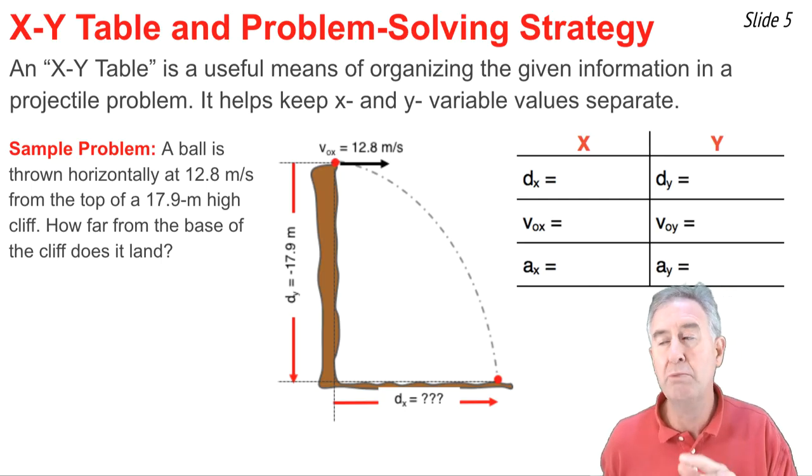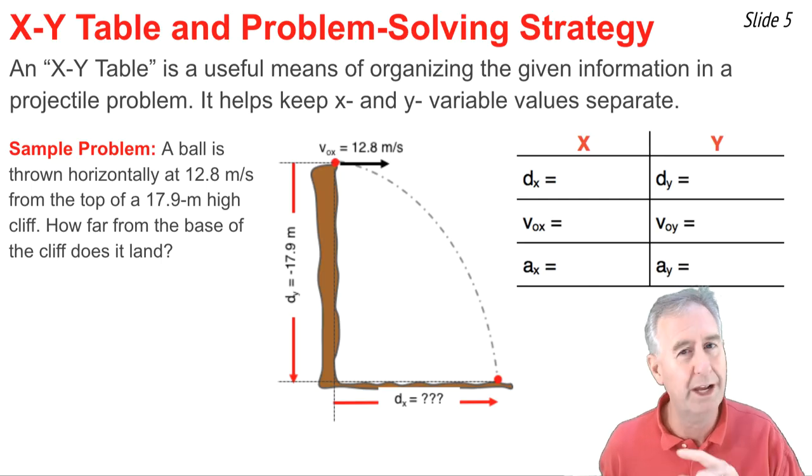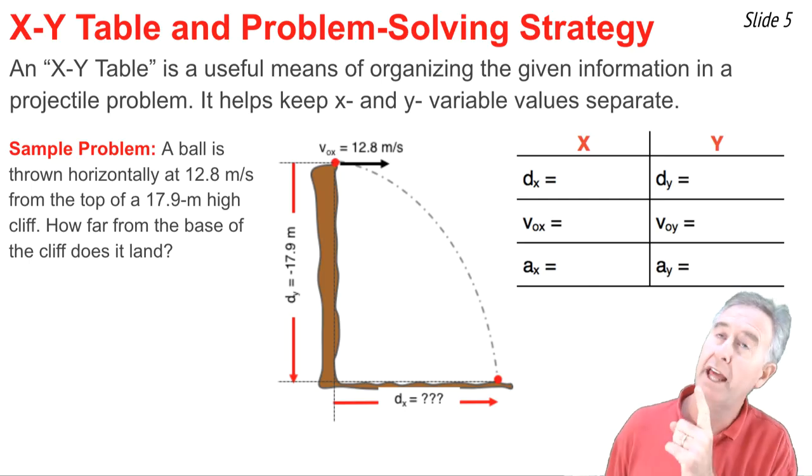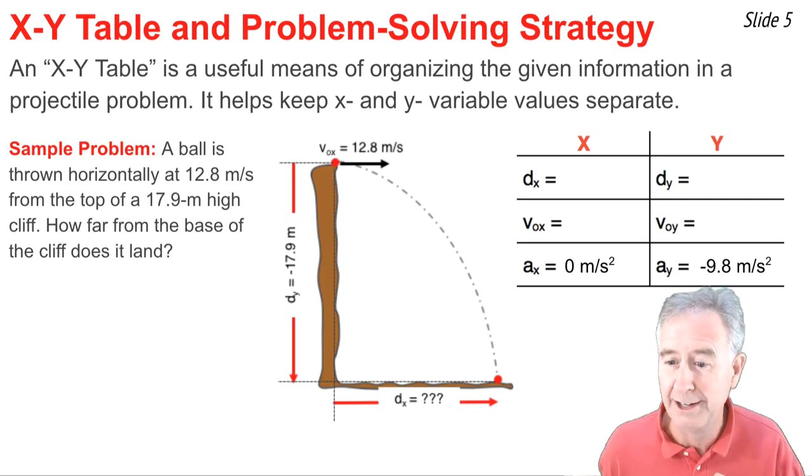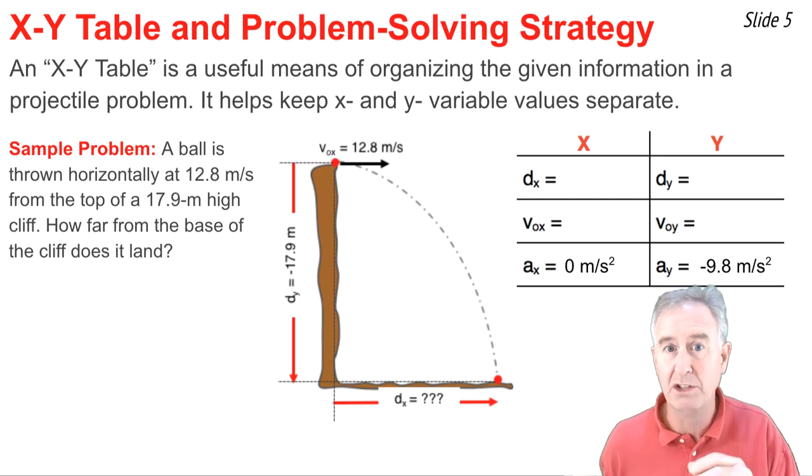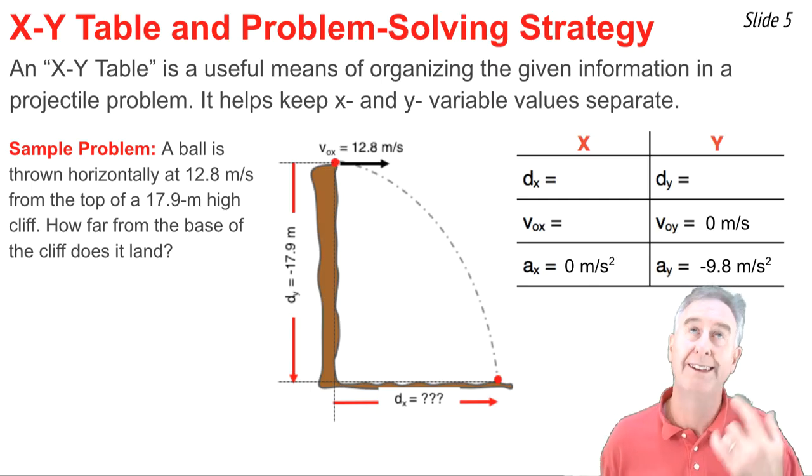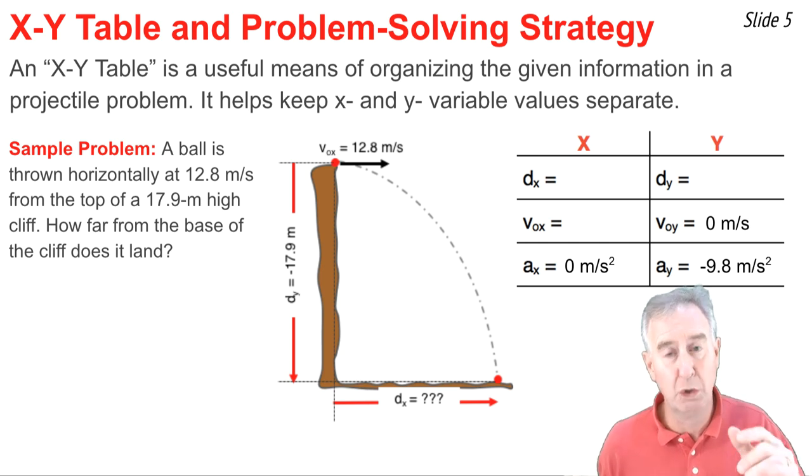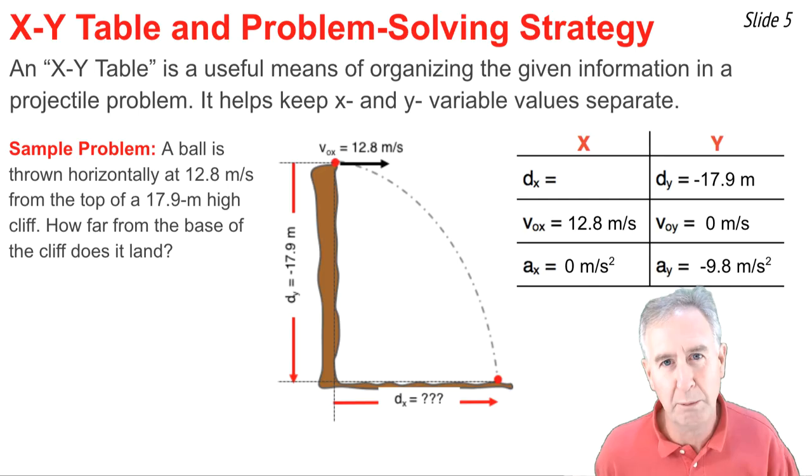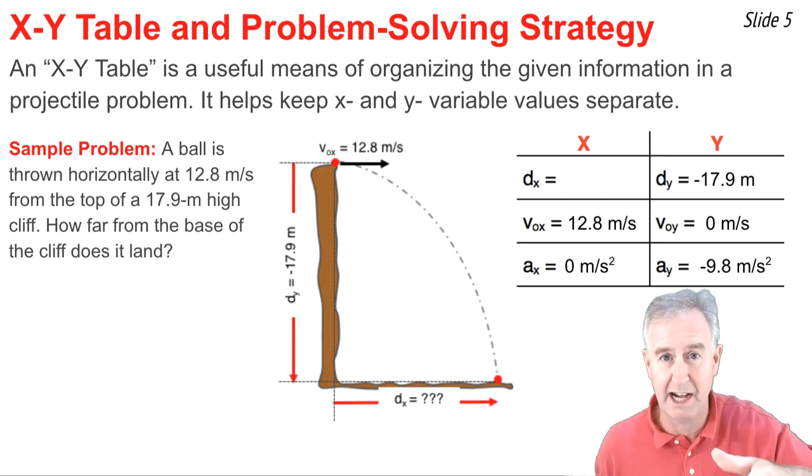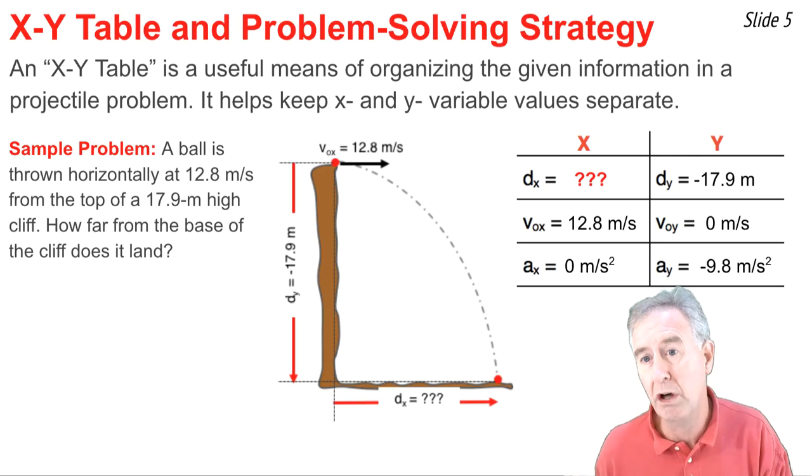Now the next thing I'm going to do is take the two bits of information in my word problem and anything else I know and put it in an XY table in the appropriate space. Now this is a projectile. What I know about projectiles is I know the bottom row of this table. I know that AX is zero and AY is negative 9.8 meters per second squared. And this is a horizontally launched projectile. So originally there's no Y velocity. So I know VOY is zero meters per second. The 12.8 meters per second is an original velocity in the X direction. So I put that in the VOX cell. And the 17.9 is a vertical displacement. I put negative because it was displaced down. Those are the five things I know. Here's the one thing I'm looking for, the horizontal displacement, DX.